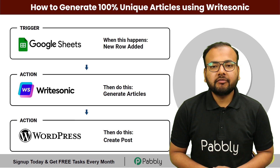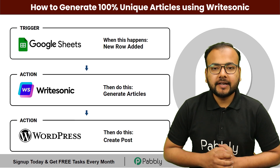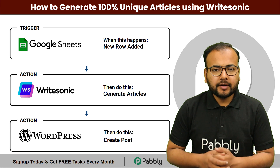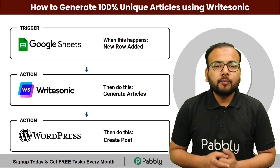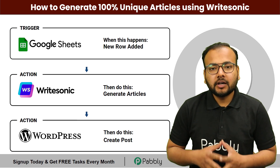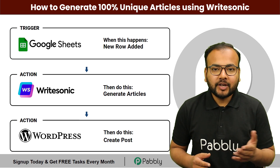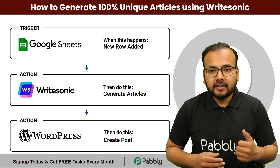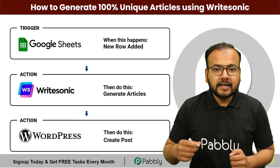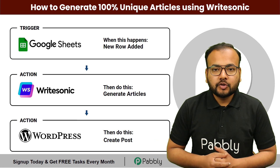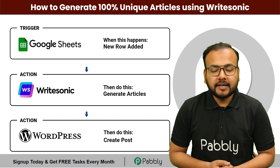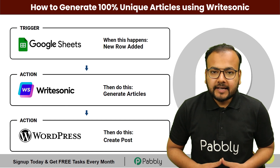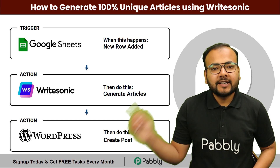Welcome to this tutorial on how to generate 100% unique articles using WriteSonic. If you are a content writer or a blogger, you already know how challenging it can be to produce fresh and unique content consistently. That's where WriteSonic comes in. WriteSonic is an AI-based content generation tool, and here we are going to integrate WriteSonic inside an automation workflow so that you can create and generate articles automatically and get them posted to your website or blog automatically — all without any coding.